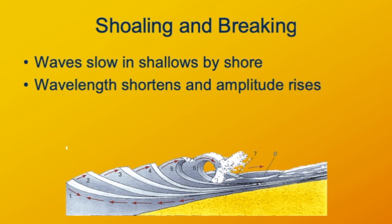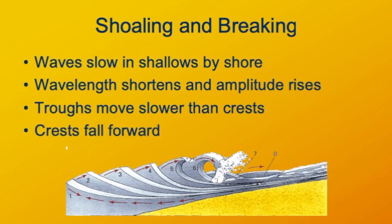At the crest of the wave, the water is quite a bit deeper than it is at the trough of the wave. So the troughs tend to be slowed down more than the crests. The crests will outrace the troughs and fall forward. And that's when you get the breaking wave.